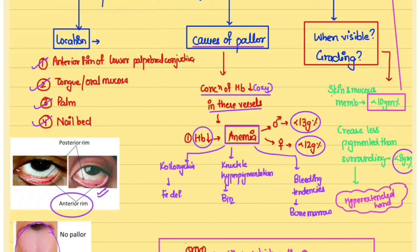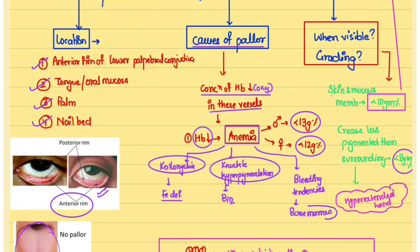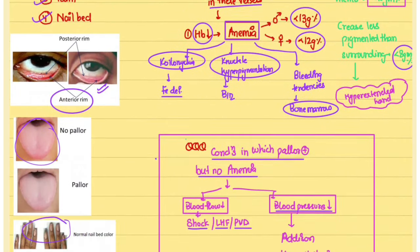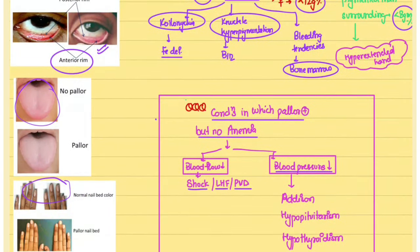If pallor is present and we suspect anemia, we should look for associated features in the general physical examination. We can check the nails for koilonychia, present in iron deficiency anemia; look for hyperpigmentation of the knuckles in B12 deficiency; and check for bleeding tendencies, which may suggest a bone marrow disorder.